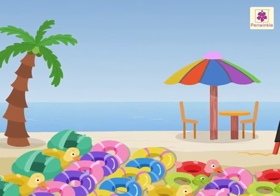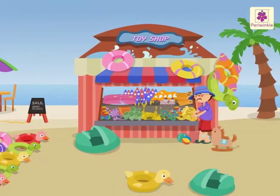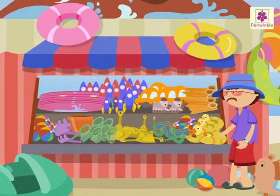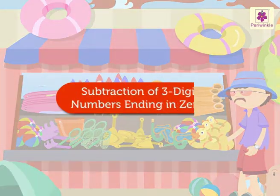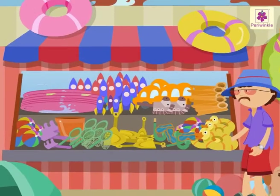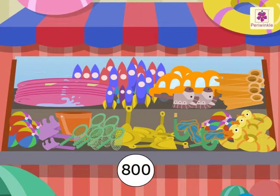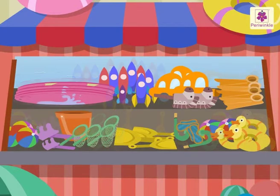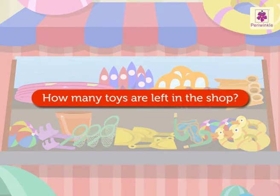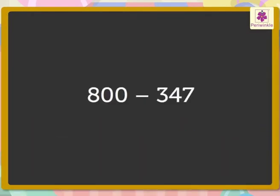Look at this beautiful beach and see a beach toy shop. The shopkeeper is finding out how many toys are left in his shop. Come, let us learn subtraction of three-digit numbers ending in zeros with him. The shopkeeper had 800 beach toys, out of which he sold 347. How many toys are left in the shop? Here we have to subtract 347 from 800 to find out how many beach toys are left. Let us begin.